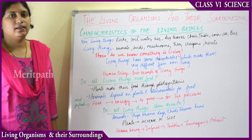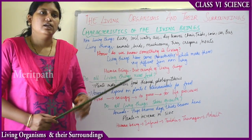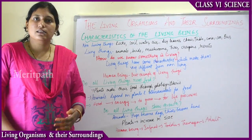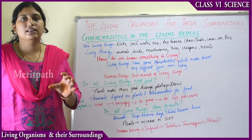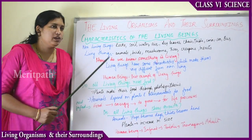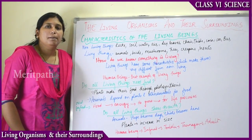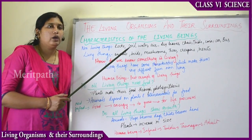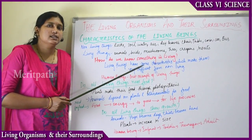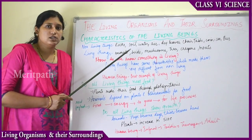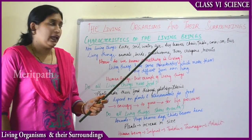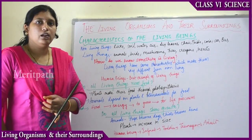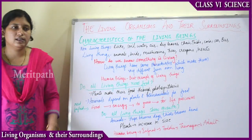Next is the characteristics of living beings — what features differentiate living things from non-living things. Non-living things around us include rocks, stones, soil, water, air, dry leaves, chairs, tables, coins, cars, buses, and all vehicles.